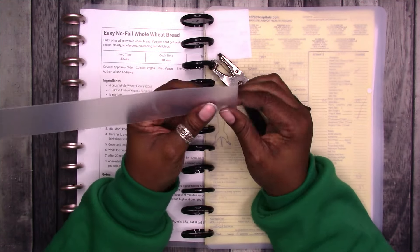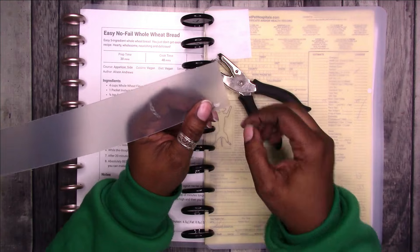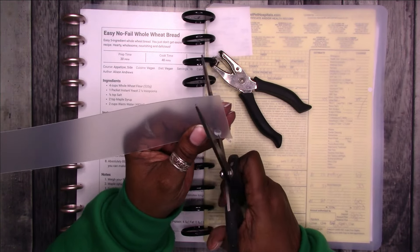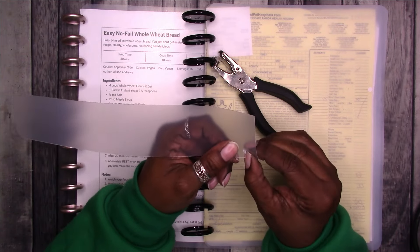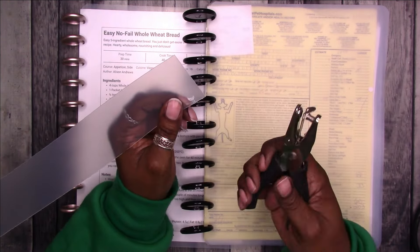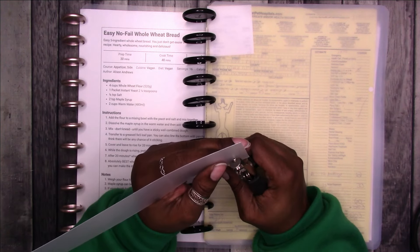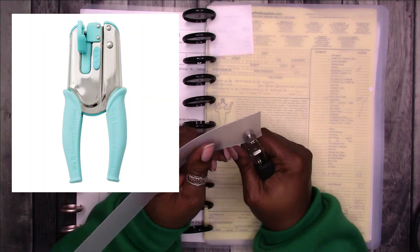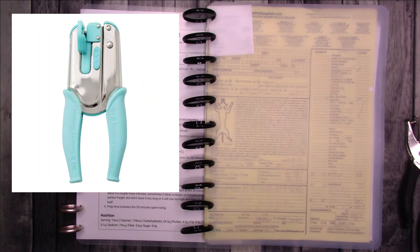But I do have a heavy duty punch. But just say that was punched out, then you would just take your scissors and cut the slit. I'm sure there's lots of videos that show how to do this. I just can't apply the pressure, enough pressure to punch that hole.